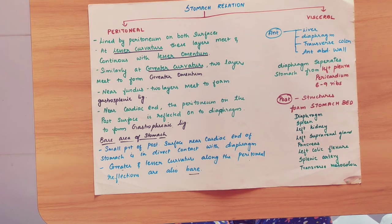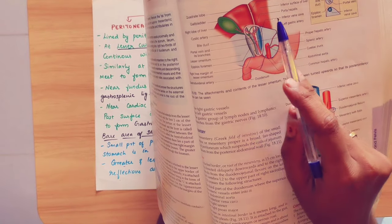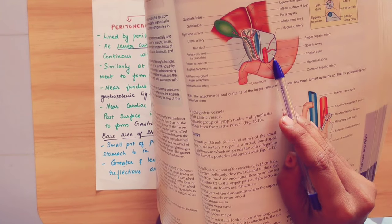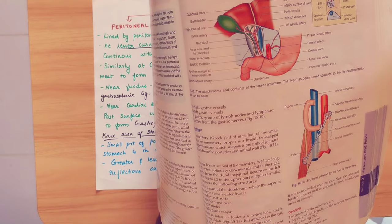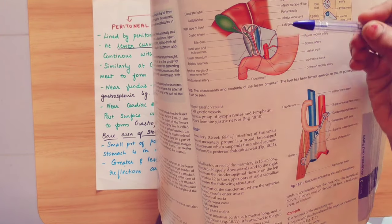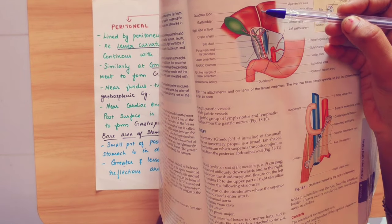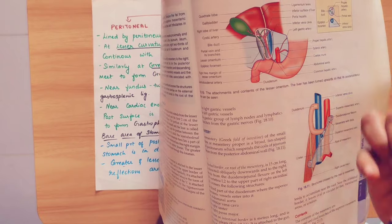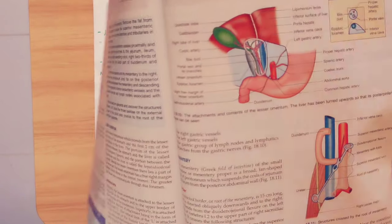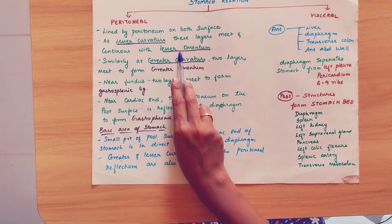At the lesser curvature, these layers meet and continue with the lesser omentum. You can see in this diagram — this is the lesser curvature, this is the liver. Between the liver and lesser curvature, the peritoneum forms a double fold, and that is why we call it the lesser omentum.